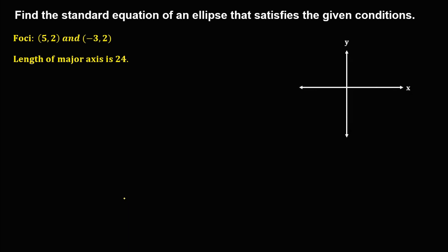First we need to graph this ellipse using the given. From the foci, x is positive 5 and y is positive 2, so this is the coordinate of the first focus. The other focus has x equal to negative 3 and y equal to positive 2. Observe that the foci are in a horizontal position, so therefore this ellipse is in horizontal form.